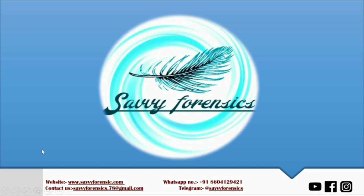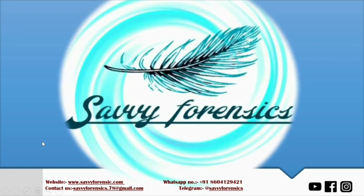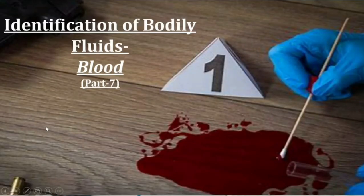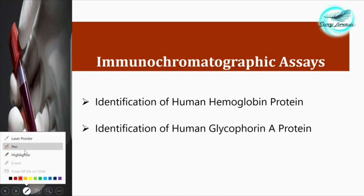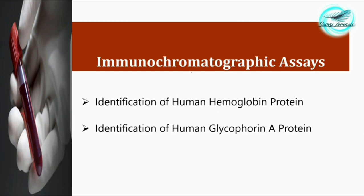Welcome back to Savvy Forensics. This is the seventh part of the identification of bodily fluids series. We were talking about blood, and in this video we'll be looking at the immunochromatographic assay, which is usually done on the basis of human glycophorin A protein. In the previous video we discussed human hemoglobin protein identification through the immunochromatographic process. If you haven't watched that video, please go back to the playlist and watch it first.